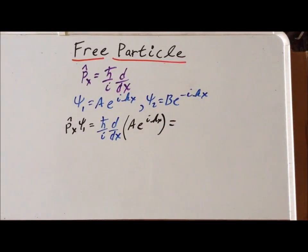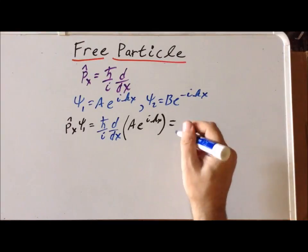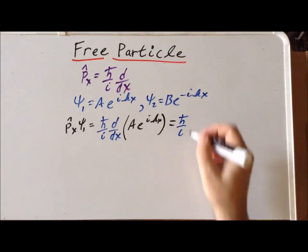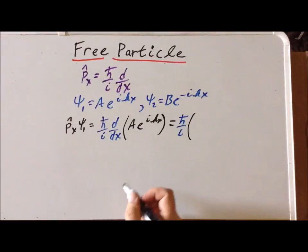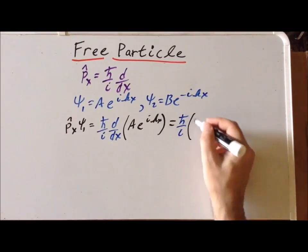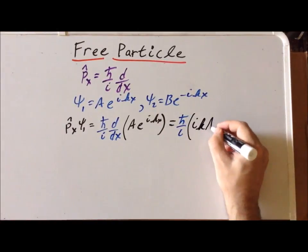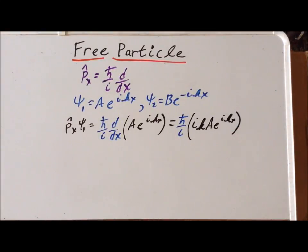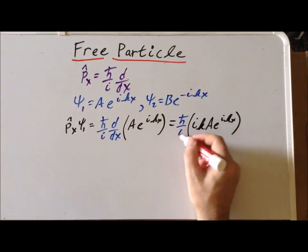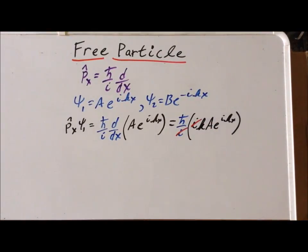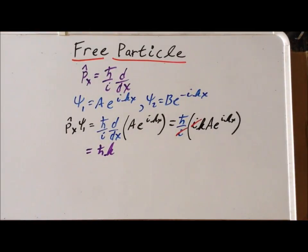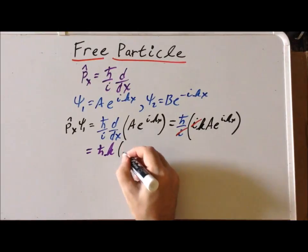Taking the derivative, we bring down ik in front. Factoring out constants and simplifying, we notice that we have i divided by i, so the i's cancel. And we're left with h-bar k times A e to the i kx.